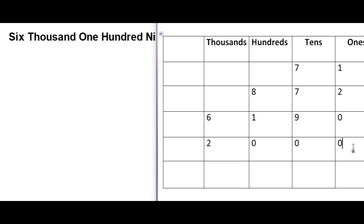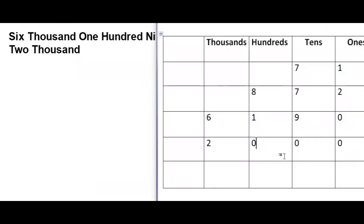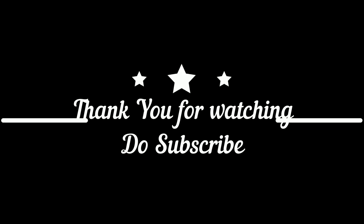Now this number — 2 is in the place of 1000's, so we will write 2000. And in the place of 100's, 10's, and 1's, it's all 0, so we will not write anything. This number is only 2000. I hope you will understand how we write a number in words. Thank you for watching. Do subscribe for latest updates.